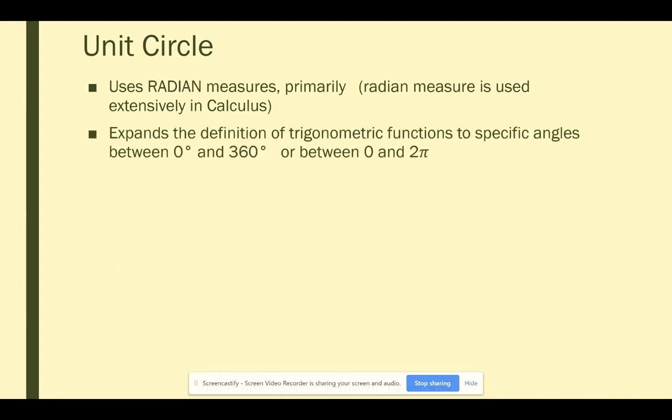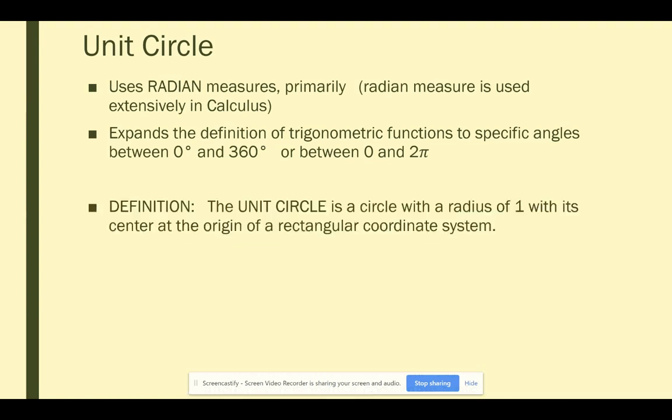One of the benefits of the unit circle is we can expand our definition of the trigonometric functions to specific angles that are between 0 degrees and 360 degrees, which is a full revolution around a circle or between 0 and 2π, if you think about it in terms of radians.